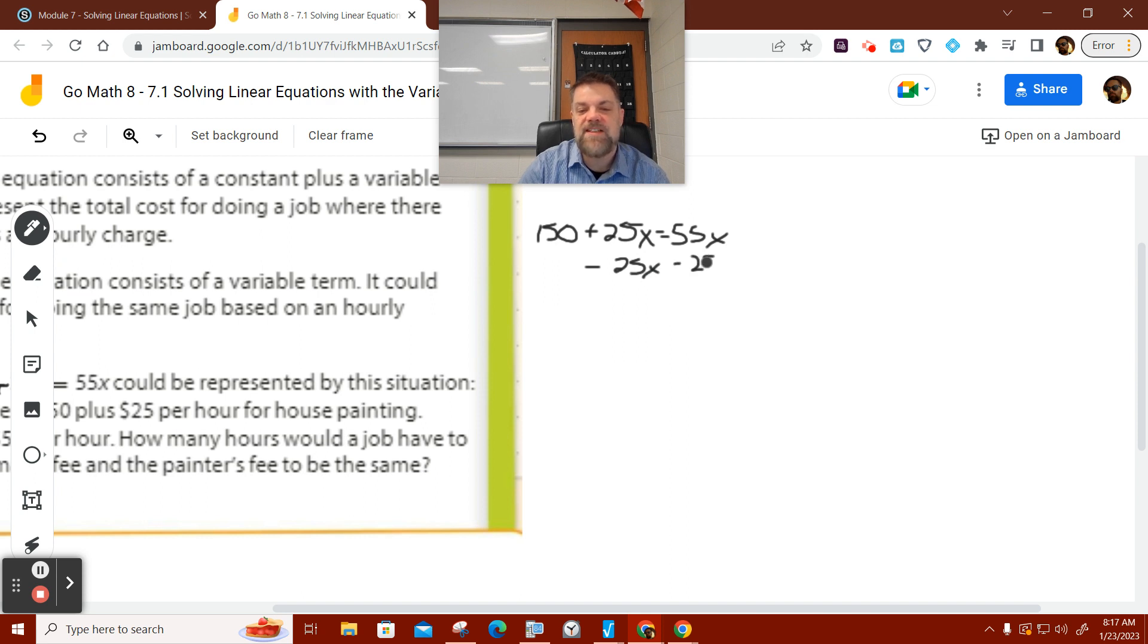All right. So, we get both X's on the same side. I need to move one. Now, because I'm moving the 25 with the X, and it's a positive 25X, I simply subtract from both sides. This becomes zero. So, I'm left with 150. What's 55 minus 25? Or, as they say where I come from, 30.